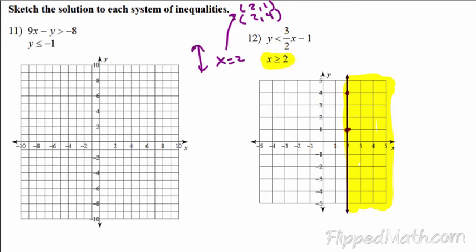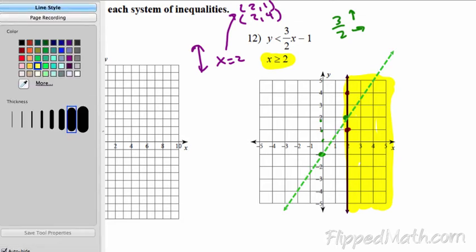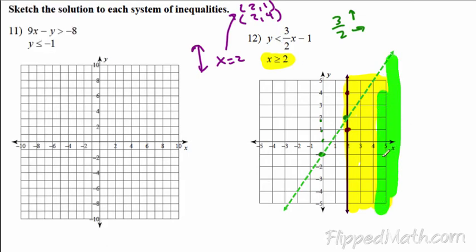For the second inequality, we're looking at a slope of 3 over 2, so going up and to the right. Starting at negative 1 down here, we go up 3 over 2. We have to be careful because this line is dotted — it's not equal to. Now we need to do the shading: it's less than, so we shade underneath the line. The double-shaded region is our solution to the system.